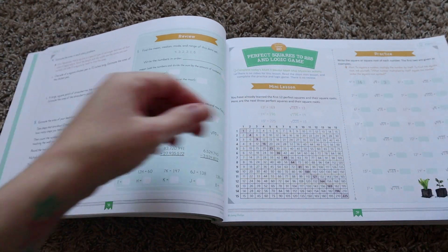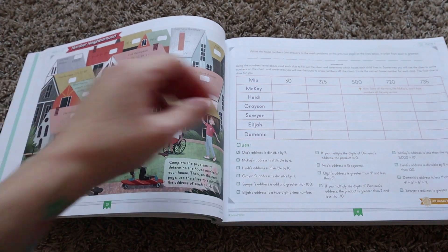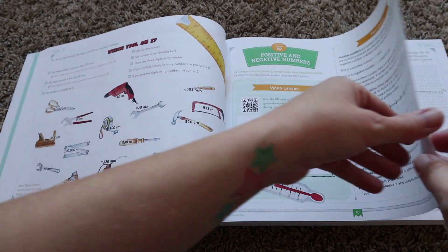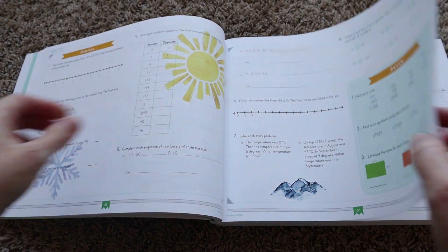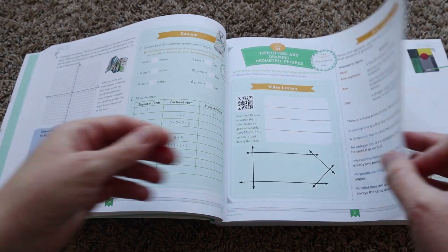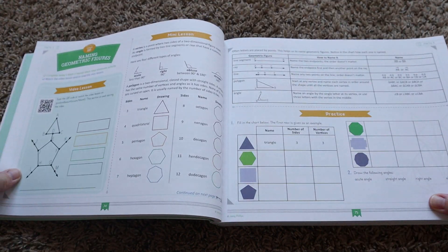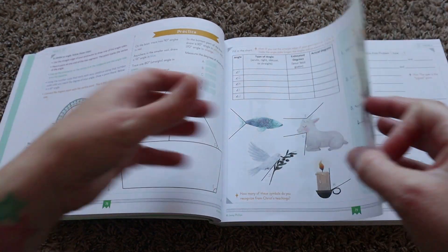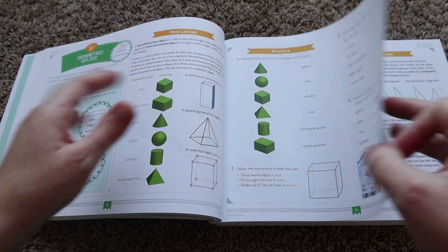Now, as far as lessons go, it is estimated to take about 35 to 45 minutes, four days a week, and there's about 120 lessons total. So that's going to be about 30 weeks long. There are optional videos that accompany these lessons. And overall, the curriculum is designed for your child to be able to complete independently.